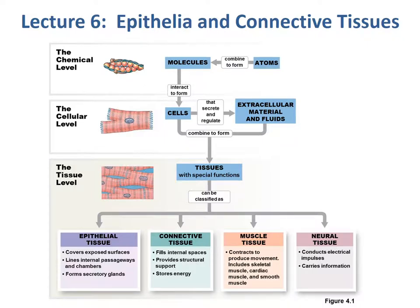This is Lecture 6, covering epithelial and connective tissues. We've talked about the chemical level of how atoms combine to form molecules, which interact to form cells at the cellular level. Cells secrete and regulate extracellular material and fluids, and those fluids with the cells combine together to form tissues. Each of these tissues has a special function. We've talked about these tissues before: epithelial, connective, muscle, and neural tissue.